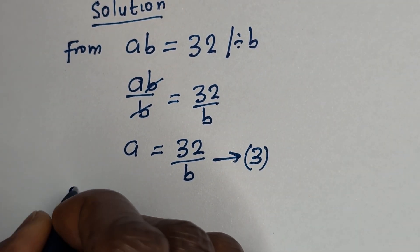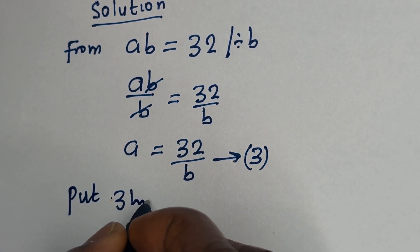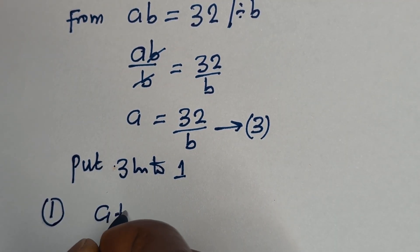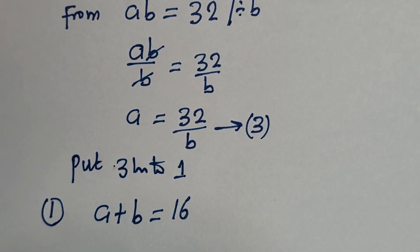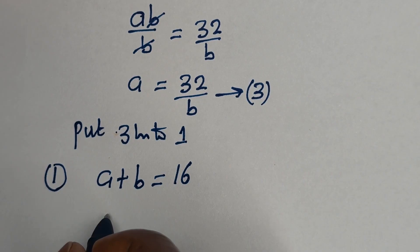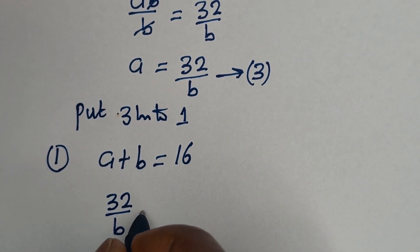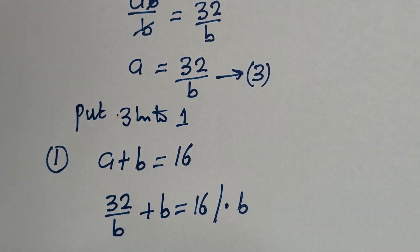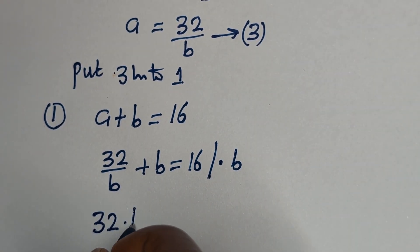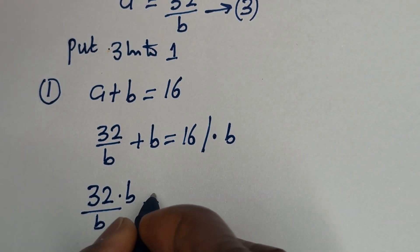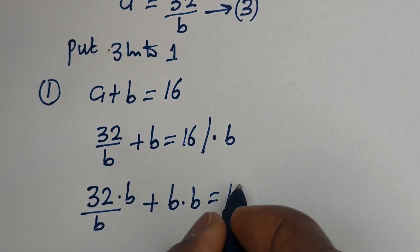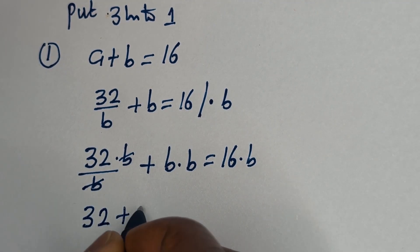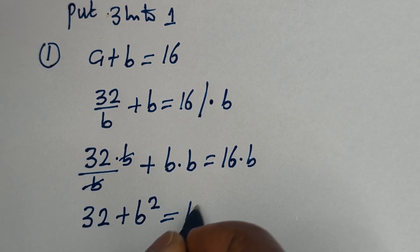Now we can put equation 3 into equation 1. That is, equation 1 is A plus B is equal to 16. When A is 32 over B, we have 32 over B plus B is equal to 16. Now let us multiply the whole equation by B. Then we have 32 plus B squared is equal to 16B.